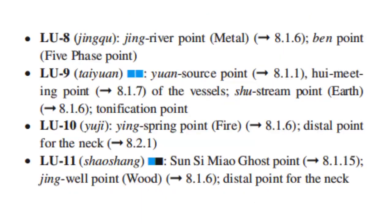Lung 8: the Jing River point (metal), the horary point for the five-phase point. Lung 9: the Yuan Source point, the Hui Meeting point of the vessels, the Shu Stream point (earth), and the tonification point. Lung 10: the Ying Spring point (fire) and the distal point for the throat.